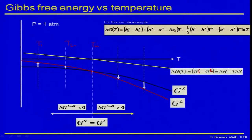Let us correct the sign convention: delta G is defined as product minus parent phase, so delta G for liquid-to-solid is G_S minus G_L. Below Tm, G_S is lower than G_L, so delta G is less than zero. Above the melting temperature, G_S is higher than G_L, so delta G is greater than zero. At the melting temperature, delta G equals zero.